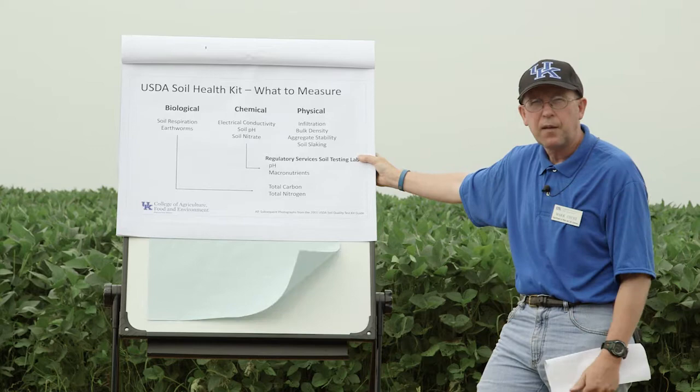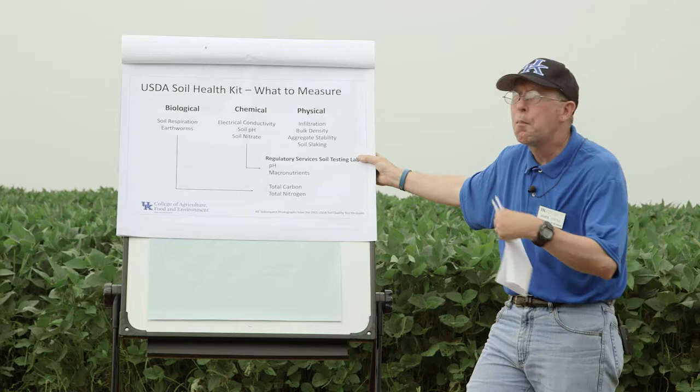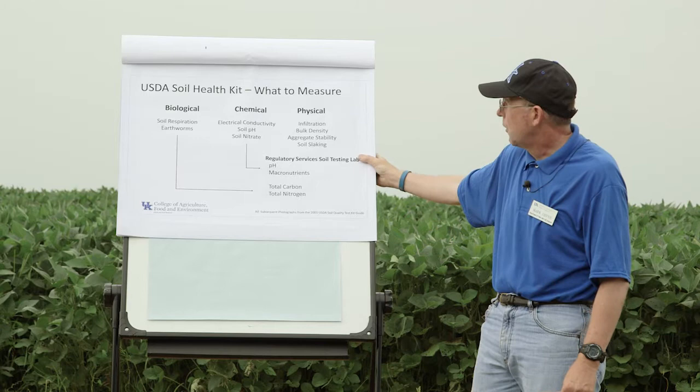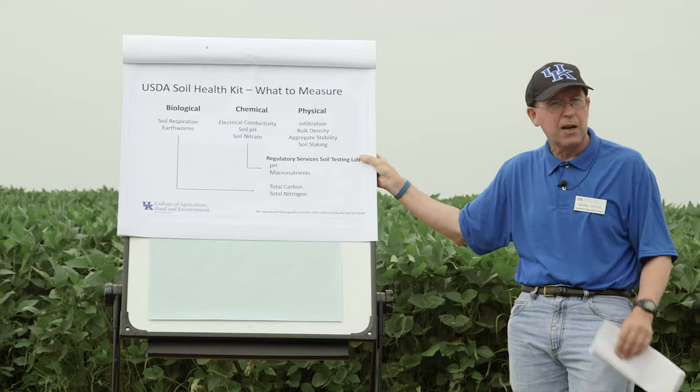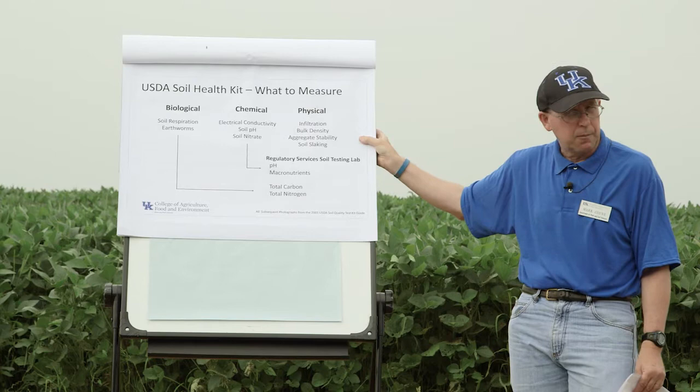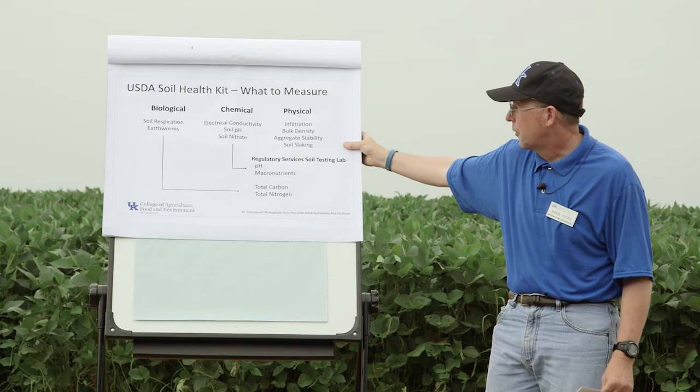The biological properties: soil respiration — how much carbon dioxide is the soil releasing? How many earthworms are present in a one foot by one foot by one foot volume of soil? Chemical properties: electrical conductivity — how saline it is; soil pH — how acid or alkaline it is; soil nitrate. And then physical properties: the infiltration rate, the bulk density, the aggregate stability, or soil slaking — porosity, and the ability of soils to hold together.